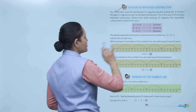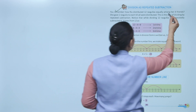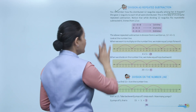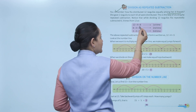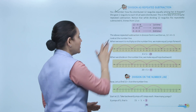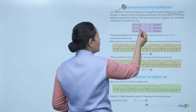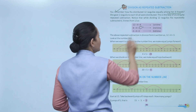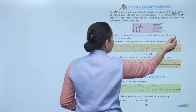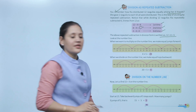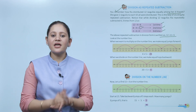Total 12 rasgullahs she has to distribute among her four friends. Every time she gives 4: 12 minus 4 is 8, then 8 minus 4 is 4, then 4 minus 4 is 0. We subtracted three times, so 12 divided by 4 equals 3.